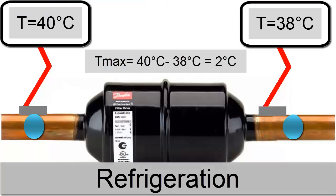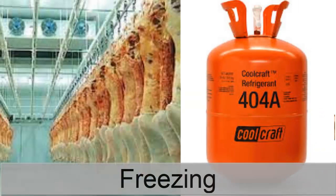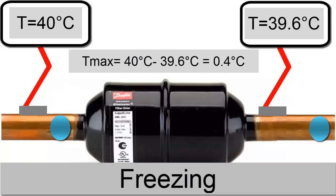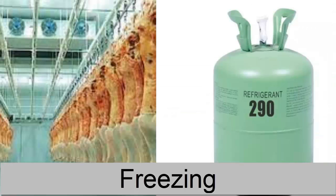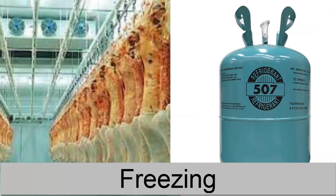In the case of freezing systems with R-404A gas, the temperature drop indicating obstruction is 0.4 degrees Celsius. With R-290, the temperature drop is 0.5 degrees Celsius. And for R-507, the temperature drop is 0.4 degrees Celsius.